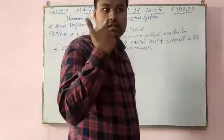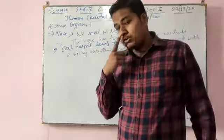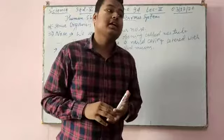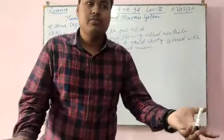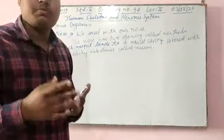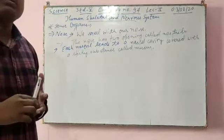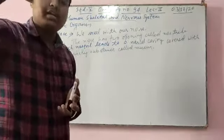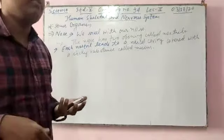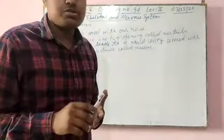Whatever we smell, the specialized cells lining our nose send a message to the brain. After that, the brain can easily detect what the smell is — any food, anything — it can be detected by our brain, thanks to the specialized cells present in our nostrils.